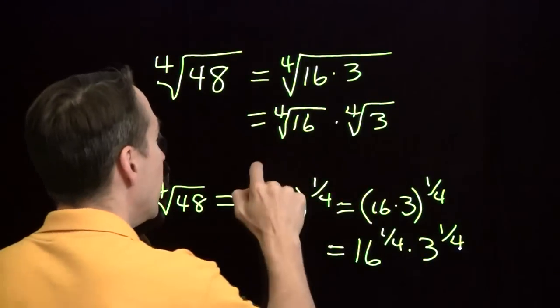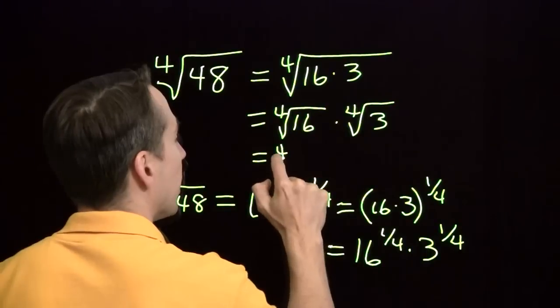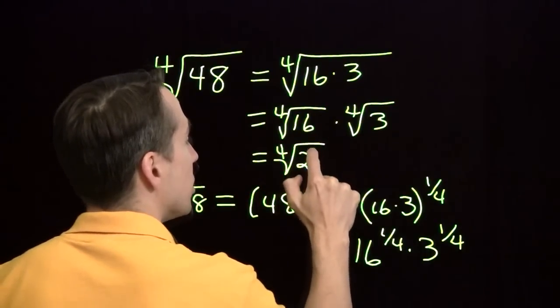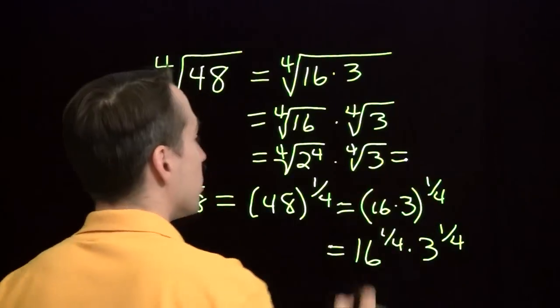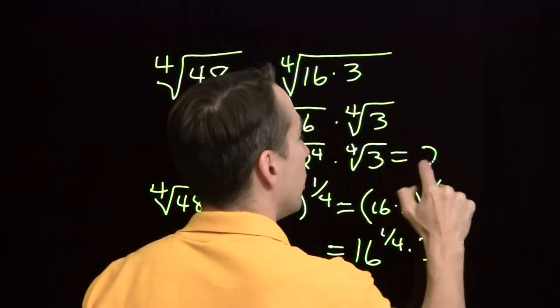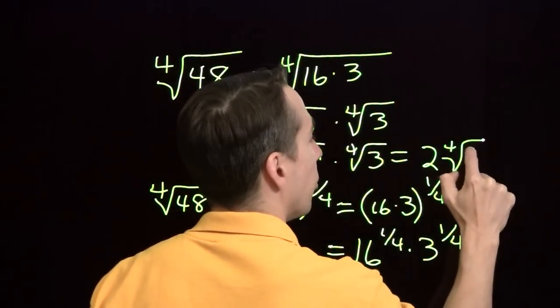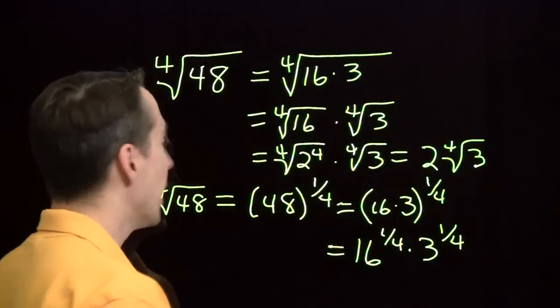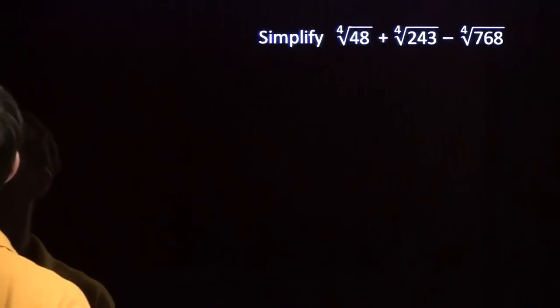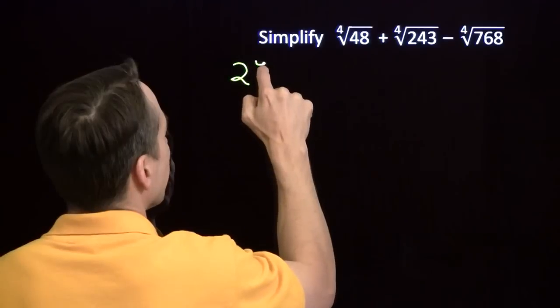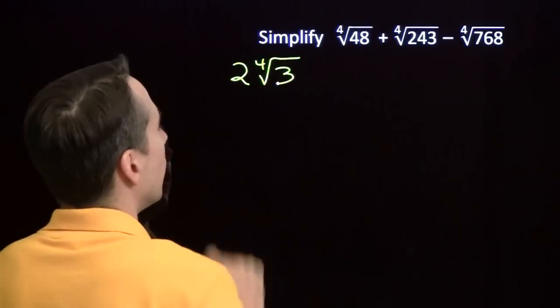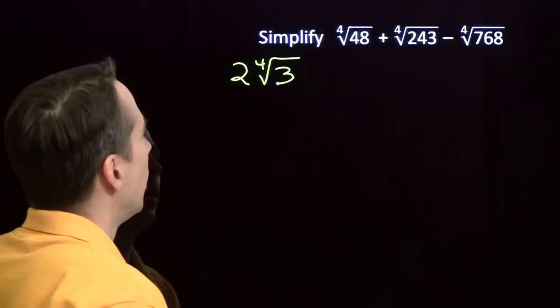Now the 4th root of 16 coming back up here. 16, of course, is just 2 to the 4th. So this is 2 times the 4th root of 3. All right, so we got that one simplified. We can go back over here and write this as 2 times the 4th root of 3. Okay, one down.